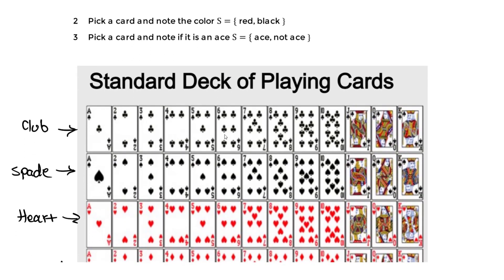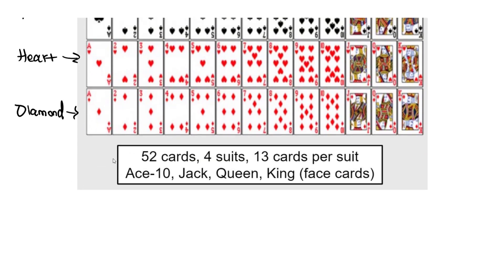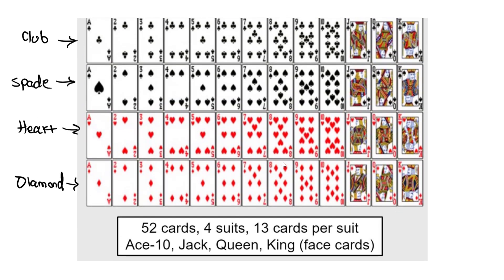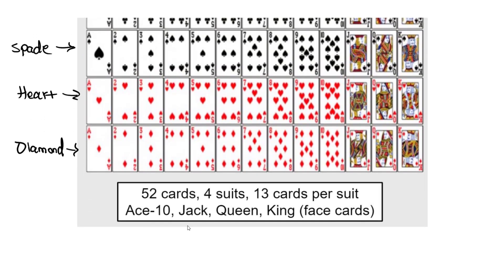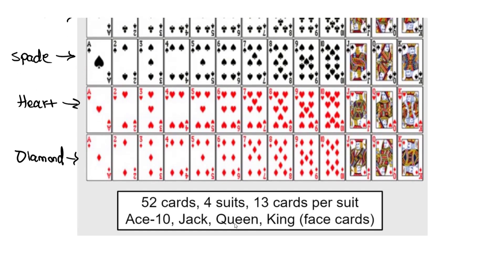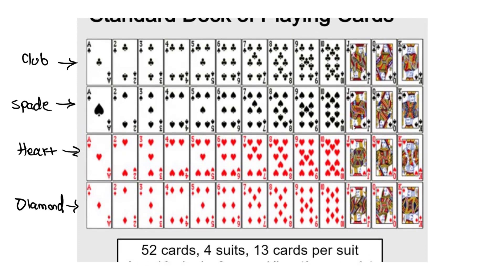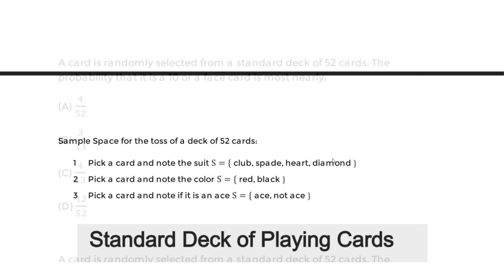So that's what we mean by sample space. Again, we have 52 cards, 4 suits, 13 cards per suit. Within each suit we have an ace, 2 through 10, and then a jack, queen, and king — and those jack, queen, and king are going to be our face cards.